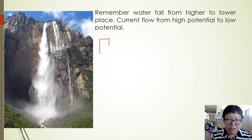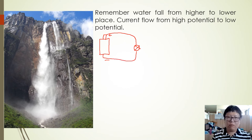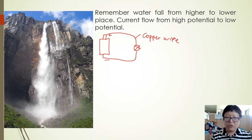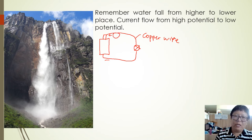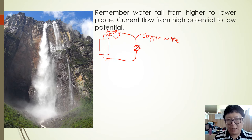Imagine that this is a battery with a positive and negative pole — this one positive, this one negative. Then you connect the battery with a lamp. I assume this is the symbol for the lamp. Inside the copper wire, we assume the copper wire is neutral at first. When you connect the copper wire with the positive terminal, the electrons will be attracted and go to the positive terminal.